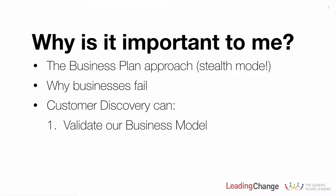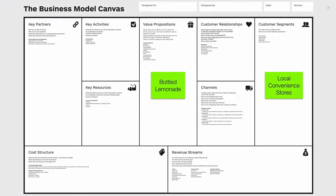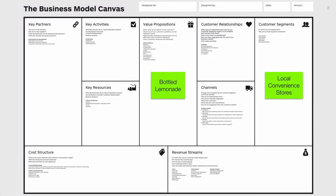What customer discovery can do is take us right back to the beginning of the process — back to the stage where we're working on our business model canvas — and it helps us validate the assumptions we're making. For example, going back to the bottled lemonade business: we had great feedback from customers, started thinking about scaling up, packaging our product and selling it more broadly. All we had at that stage were assumptions — that our product would be bottled lemonade and that we could sell it to local convenience stores.